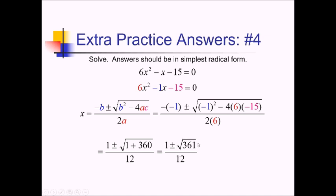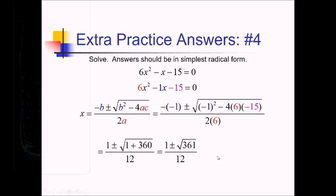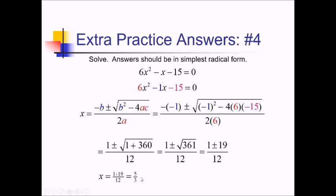At this point, I need to simplify this radical as much as I can — answers should be in simplest radical form. Since I don't know a whole lot about 361, I ask: is this already a perfect square? Square root of 361 on the calculator gives me 19, so that's a perfect square. So we've got 1 plus or minus 19, all over 12. Since I can combine the 1 and the 19, I write out two solutions: 1 plus 19 over 12 is 20 over 12, which reduces to 5 thirds. And 1 minus 19 over 12 is negative 18 over 12, which reduces to negative 3 over 2.